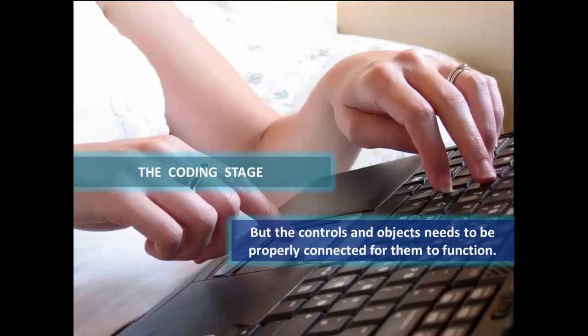Once that interface is developed, we then have to code it. We have to connect those objects to one another and make them do something. This is where the programming language comes into play. We might be able to program something in Visual Basic or in C Sharp. Using Microsoft Visual Studio, the interface may look identical, but the program used — whether it be VB, Visual Basic, or C Sharp — will differ. So we're going to use a particular language to connect all these objects and make them function.